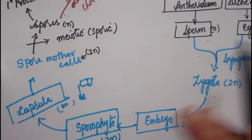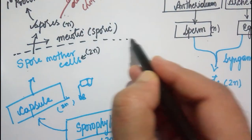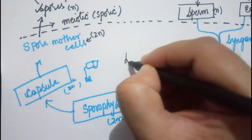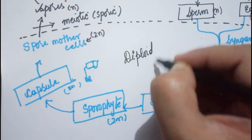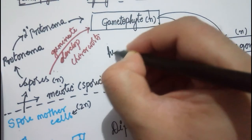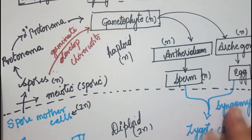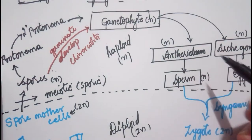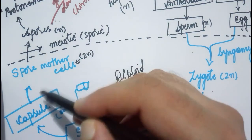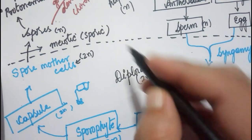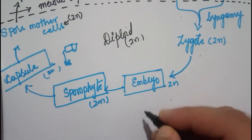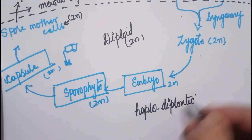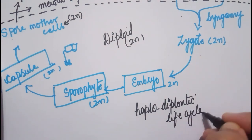You can see both haploid and diploid stages here, similar to what we've seen in pteridophytes. The blue-colored portion is completely the diploid phase (2n), and the other portion is completely the haploid phase. An almost equal number of haploid and diploid stages are present, which is why the life cycle in bryophytes is also called a haplodiplontic life cycle.